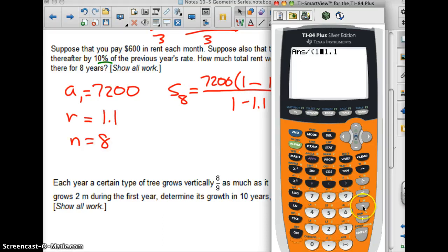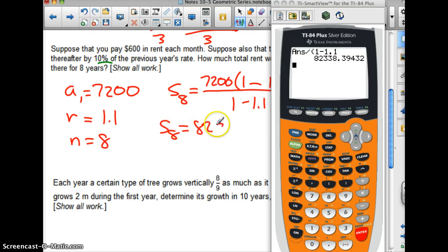Oh yeah, it should have been minus, not a negative. Enter. Enter. So that's how much rent I'm going to pay total. The sum of the eight years rent is $82,338.39. Good luck.